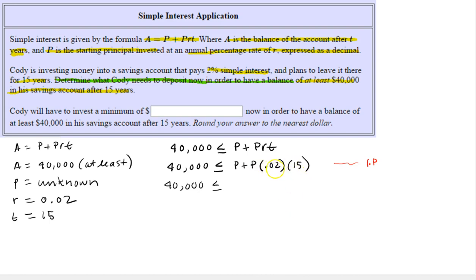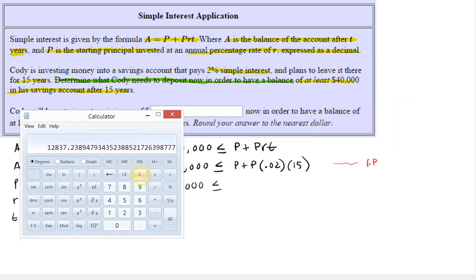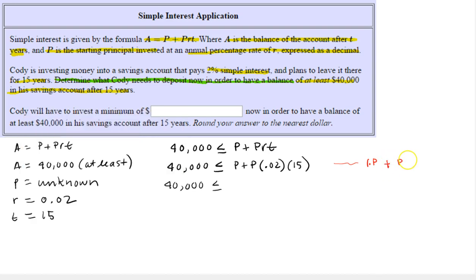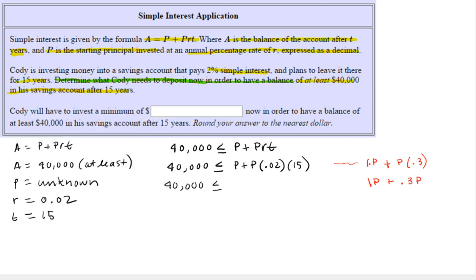And this is P times these numbers. Well, I can multiply these numbers and then write that as a coefficient of P. So 0.02 times 15 is 0.3. So this is the same as plus P times 0.3. Or we could write this as 1P plus 0.3P. So now notice these are like terms. We have 1 of something plus 0.3 of something. So the total of that is going to be 1 plus 0.3 or 1.3P.